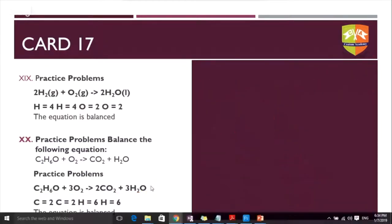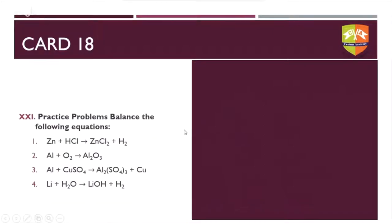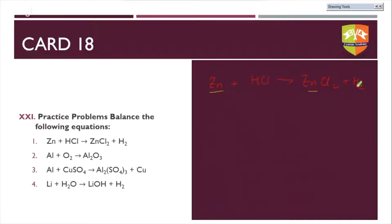More practice problems. Zinc plus HCl giving ZnCl₂ plus H₂: zinc is already balanced; there are two hydrogens on the product side but only one HCl on the reactant side, so multiply HCl by 2. Now two chlorines on each side and two hydrogens on each side — everything is balanced. The balanced equation is Zn + 2HCl → ZnCl₂ + H₂.